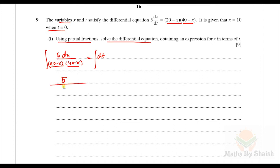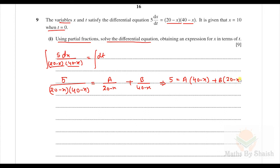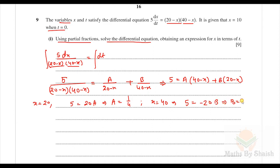We write 5 / [(20 − x)(40 − x)] = A/(20 − x) + B/(40 − x). Multiplying through by the denominator gives 5 = A(40 − x) + B(20 − x). Putting x = 20 gives A = 1/4, and putting x = 40 gives B = −1/4.